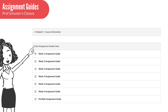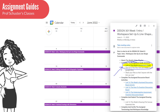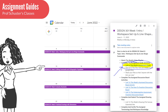So each week you will need to find the assignment guide for that week. You can find them all listed in the modules under 'Get Assignment Guides Here.' For those students who like working from a calendar instead, you will find a link on the calendar details for each week of the course.